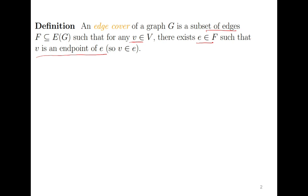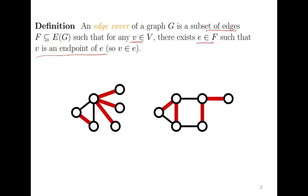Let us see some examples. For these two graphs, the red edges show an edge cover because you can see that all the vertices are incident to these four edges in the first case and four edges in the second case.